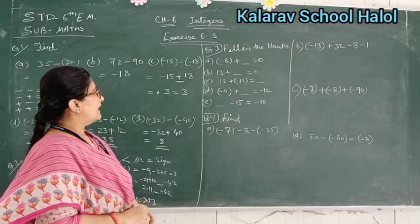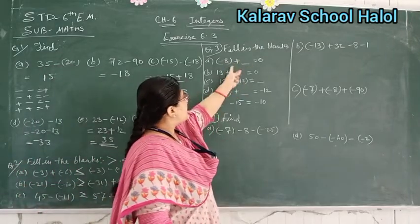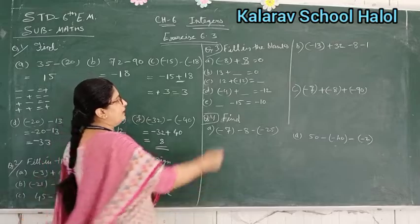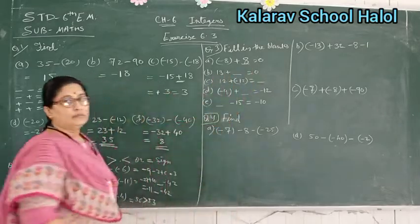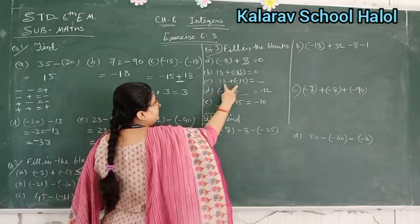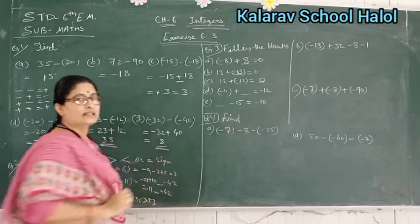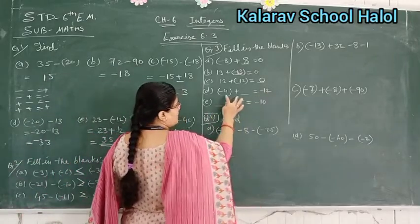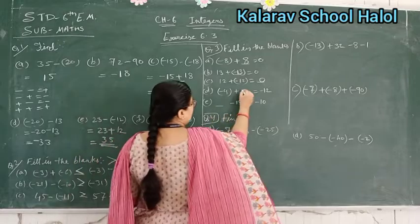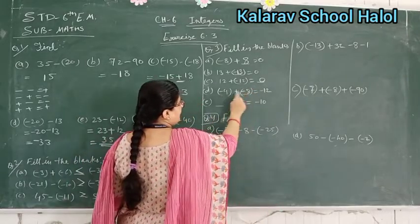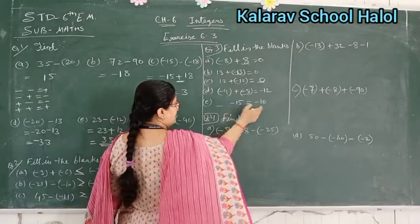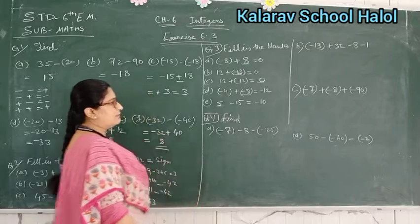Question number 3: fill in the blanks. Here the answer must equal 0. So for minus 8, what do we add to get 0? Obviously positive 8. Similarly, for 13, what do we add to get 0? We add minus 13. Then plus minus 12 — we solve it and add to get minus 12. Already minus 4 is there, so minus 4 plus minus 8 gives — minus minus is plus, so 8 plus 4 = 12, giving minus 12. Similarly, for minus 15 and minus 3 — subtract 5 from 50 to get the answer as a challenge.